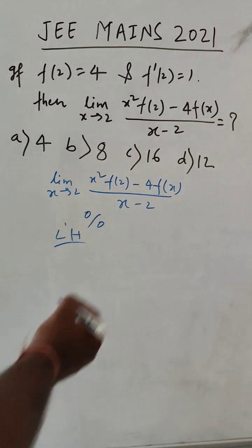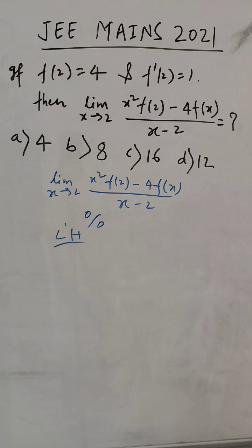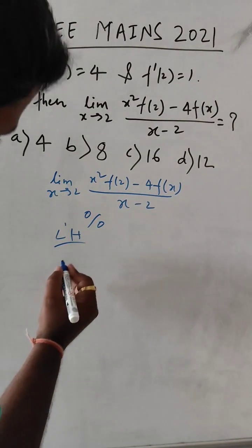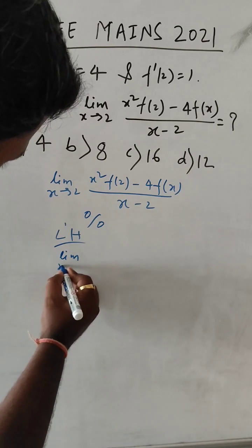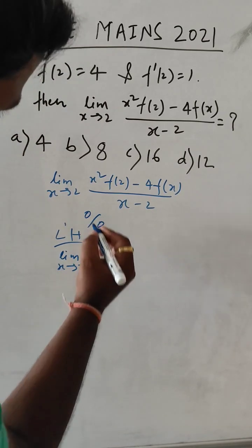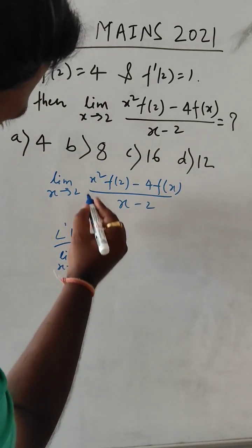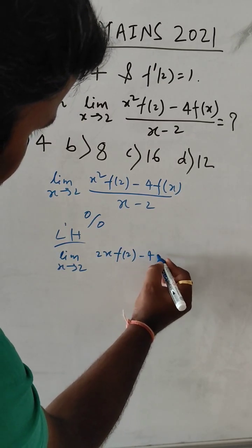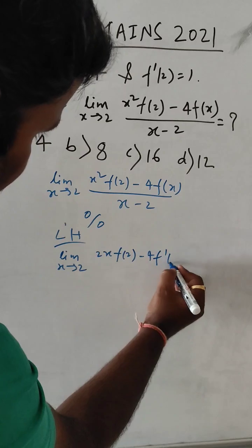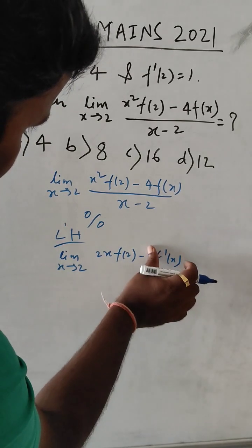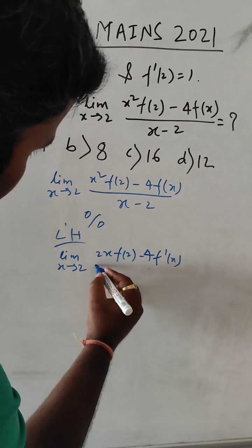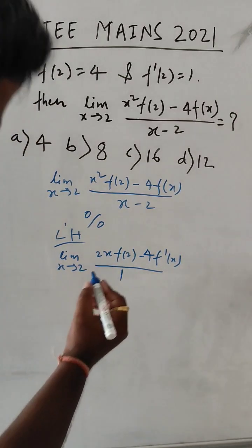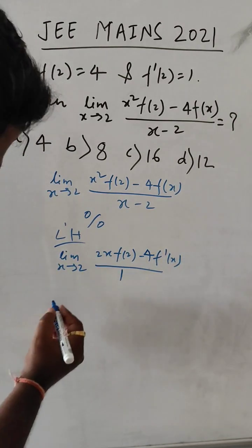In L'Hospital's rule, we have to differentiate with respect to x. So now, limit x tends to 2: x becomes 2x, and f(2) minus 4 times... this will become f'(x). The denominator becomes 1. Now we will put the value x = 2.